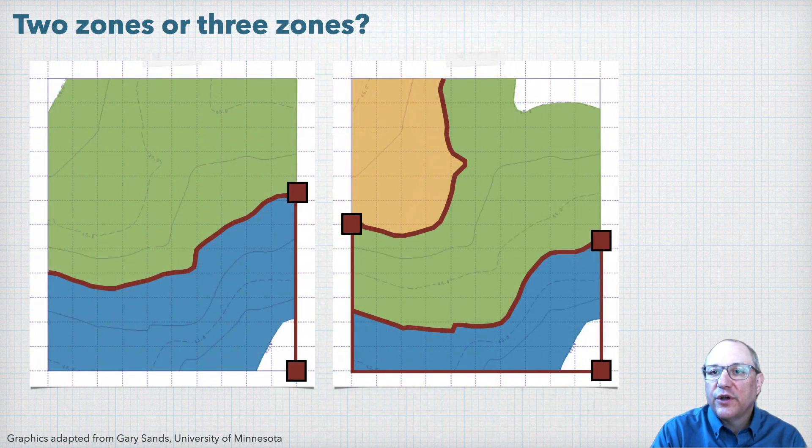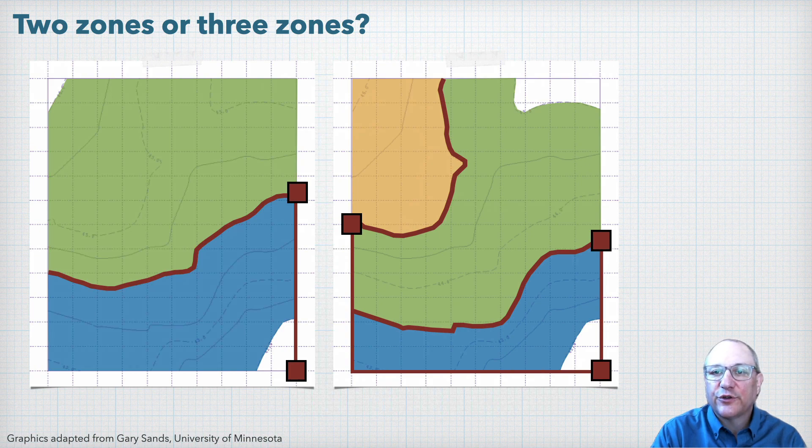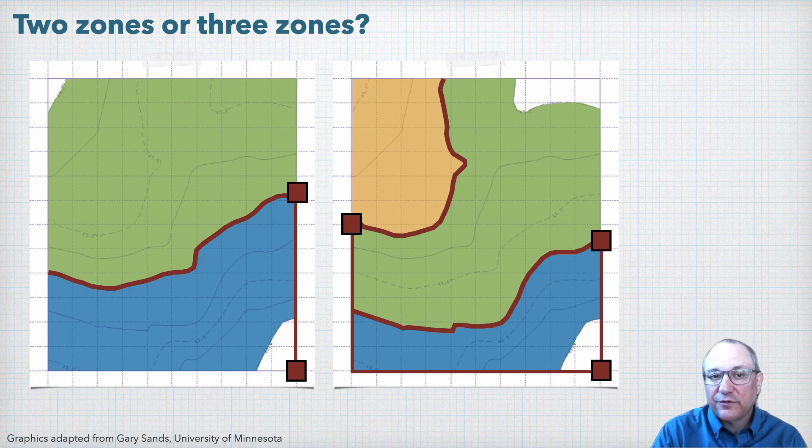So our choice of two zones or three zones comes down to the trade-off we discussed earlier. Two zones will be less expensive, but gives us less management control, whereas three zones gives us more management control, but with some added expense.